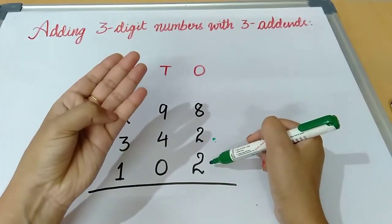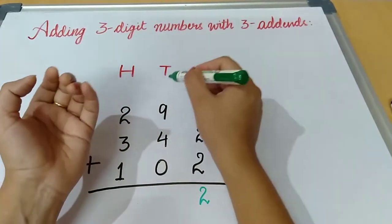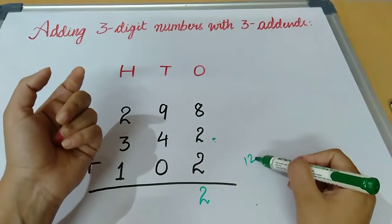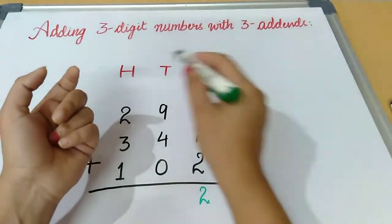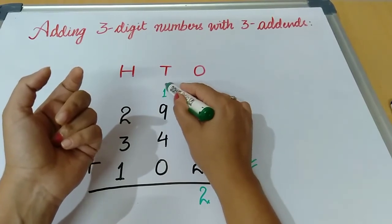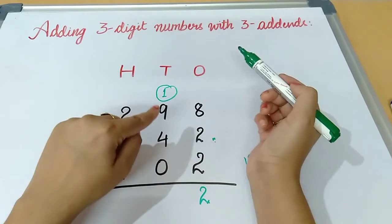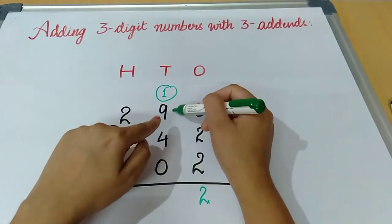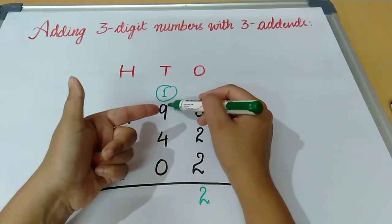After ten we will count two more: eleven, twelve. So in this way we add. Now we will take carry — twelve — so two will come here at the ones place and one will go as carry, carried forward. Now, nine plus one is ten.